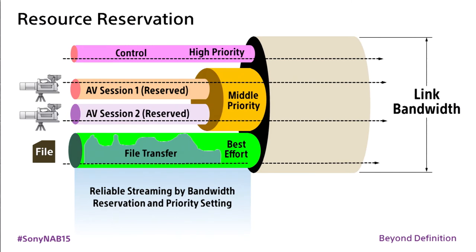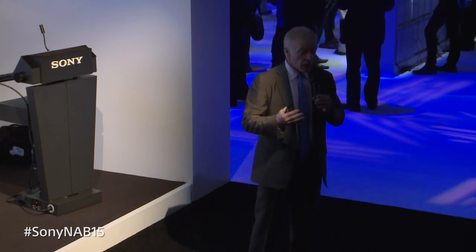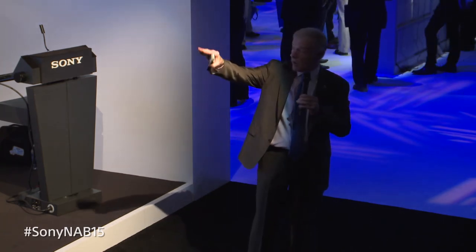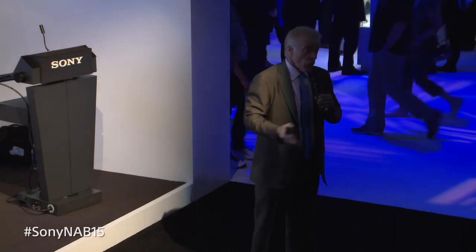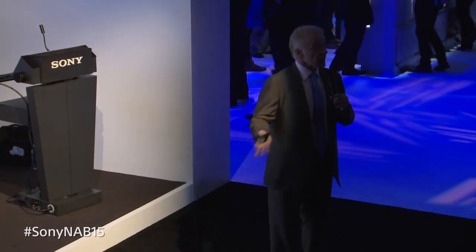We define specific lanes in the highway — bandwidth reservation. We give maximum priority to control signals and to audio-video streams; everything else — emails, PowerPoints — uses best-effort delivery. By this notion of an audio-video node, packets belonging to a single device can be sent through a switching fabric with the same performance as a video router today. We can switch cameras to destinations exactly as we do with an SDI router.